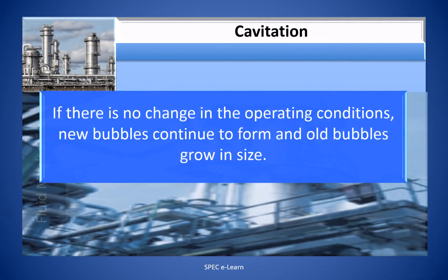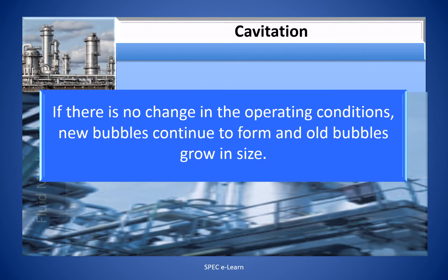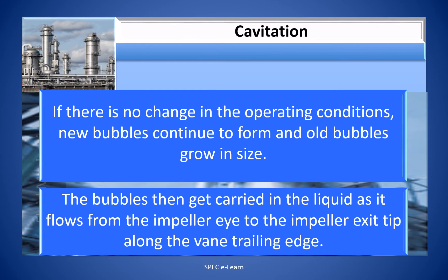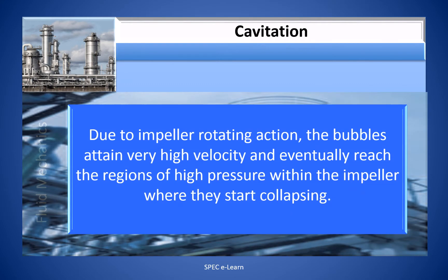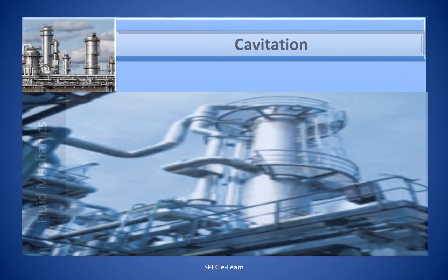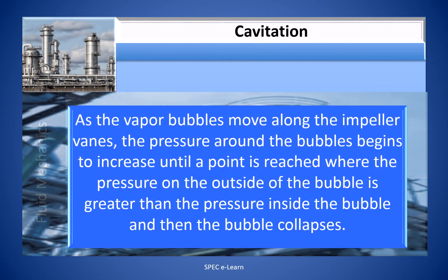If there is no change in operating conditions, new bubbles continue to form and old bubbles grow in size. The bubbles then get carried in the liquid as it flows from the impeller eye to the impeller exit tip along the vane trailing edge. Due to the impeller rotation, the bubbles attain very high velocity and eventually reach regions of high pressure within the impeller where they start collapsing. As the vapor bubbles move along the impeller vanes, the pressure around them increases until the pressure on the outside of the bubble is greater than the pressure inside — then the bubble collapses.